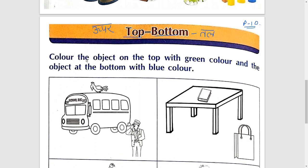Color the object on the top with green color — top पर यानि जो वस्तु टॉप पर है उसको green से करना है। Okay students, color the object at the bottom with blue color — और जो वस्तु bottom पर है उसको blue से color करना है।